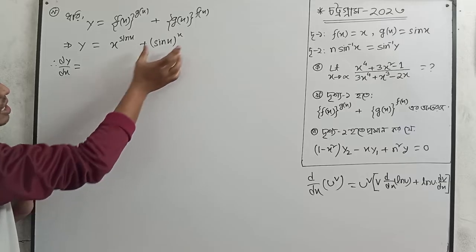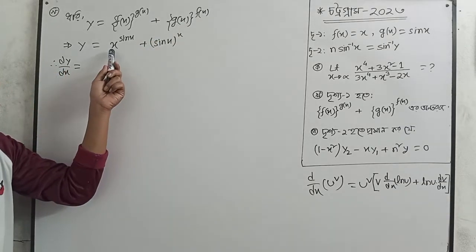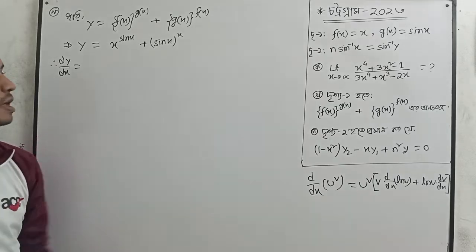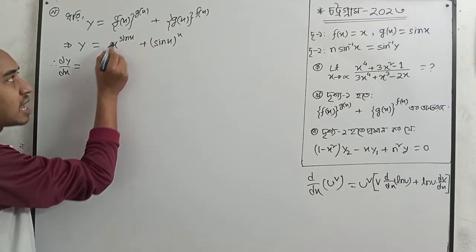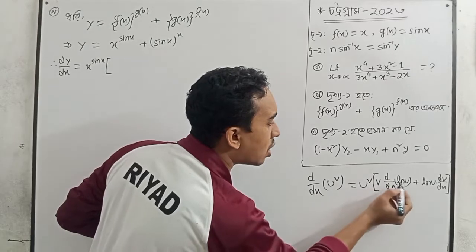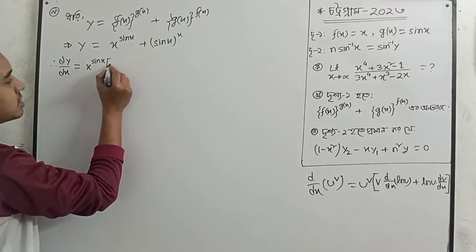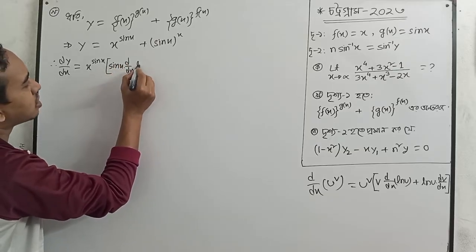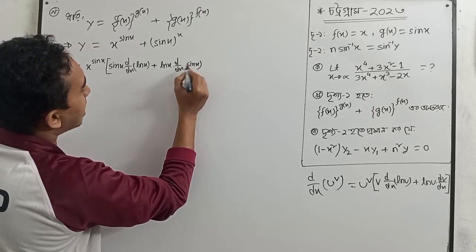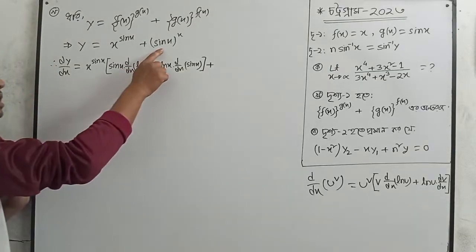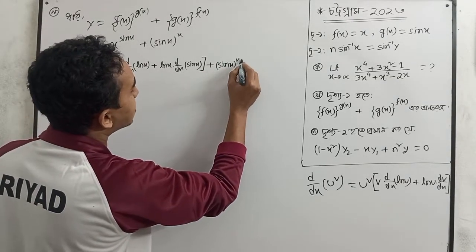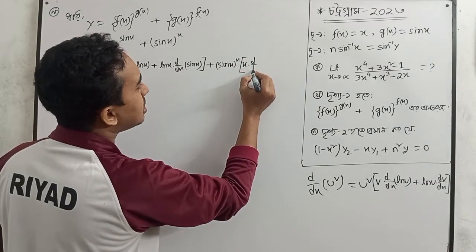We will use the u to the power v formula. Here u means x and v means sin x. So we write u to the power v, where u is x and v is sin x.